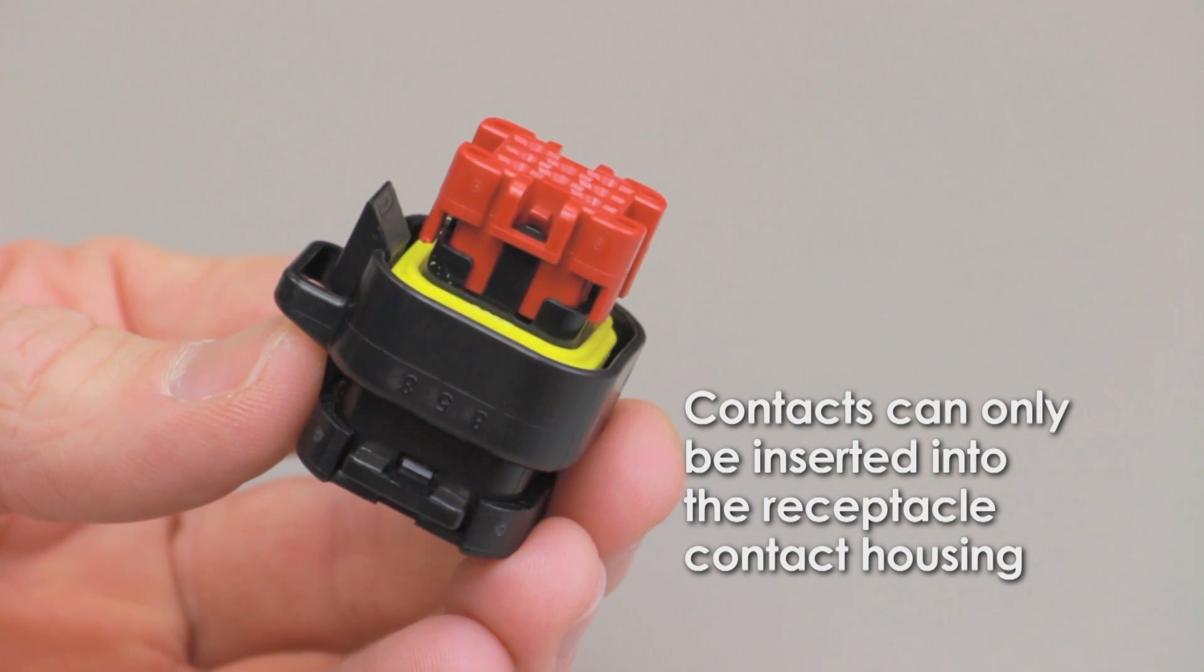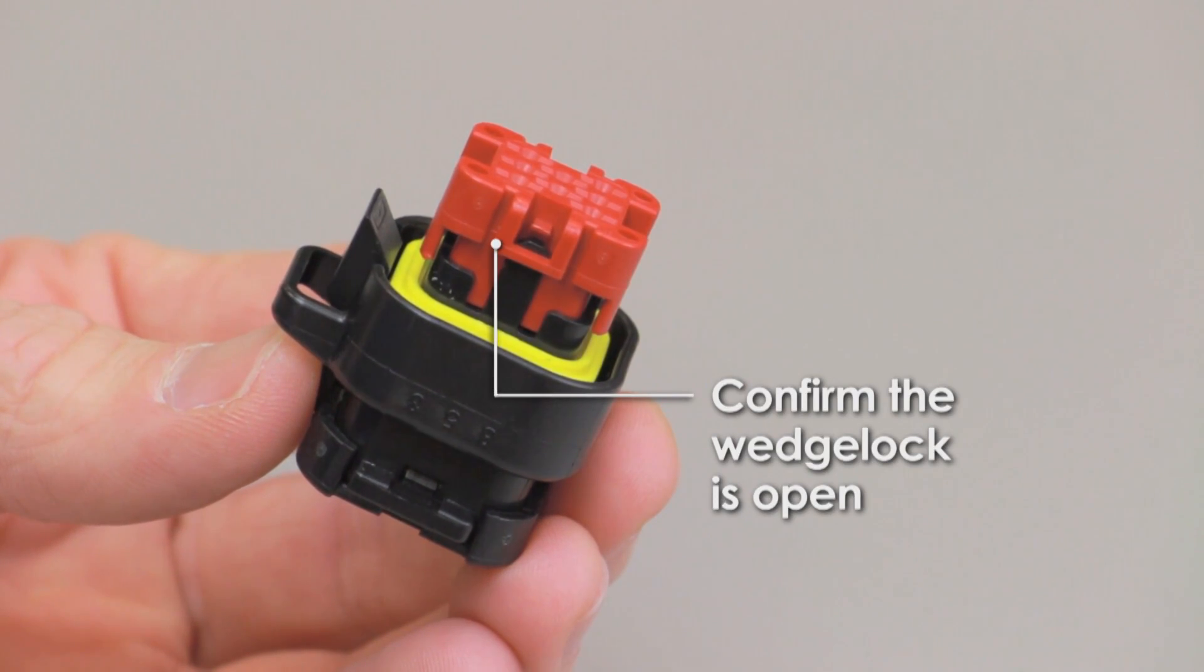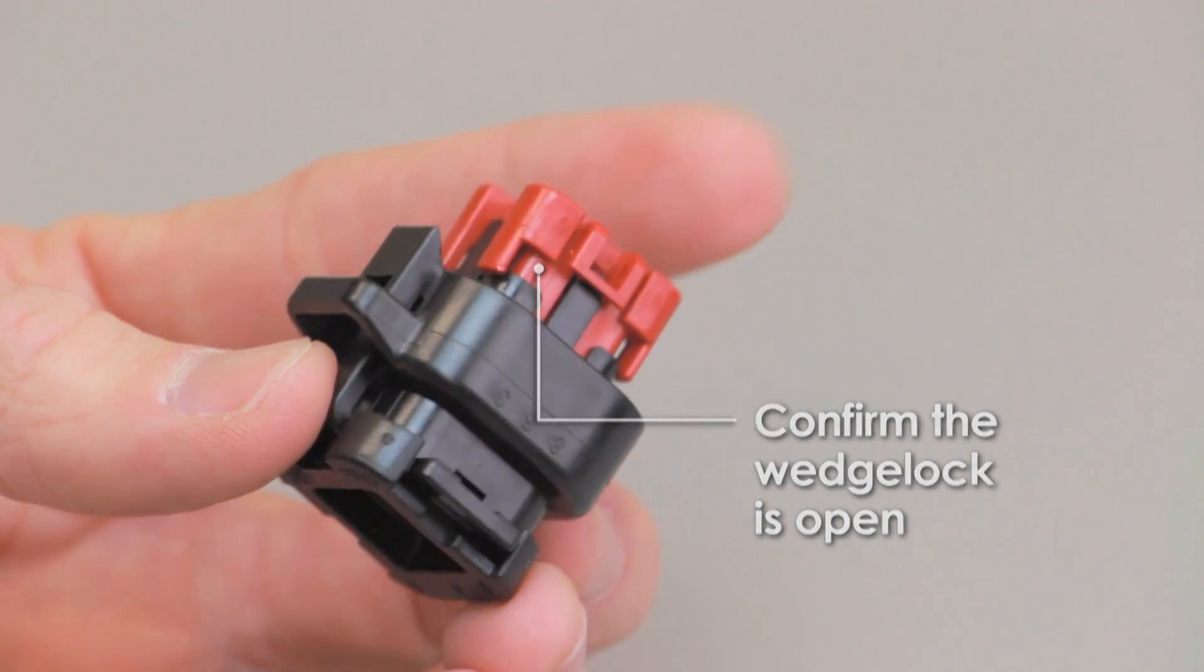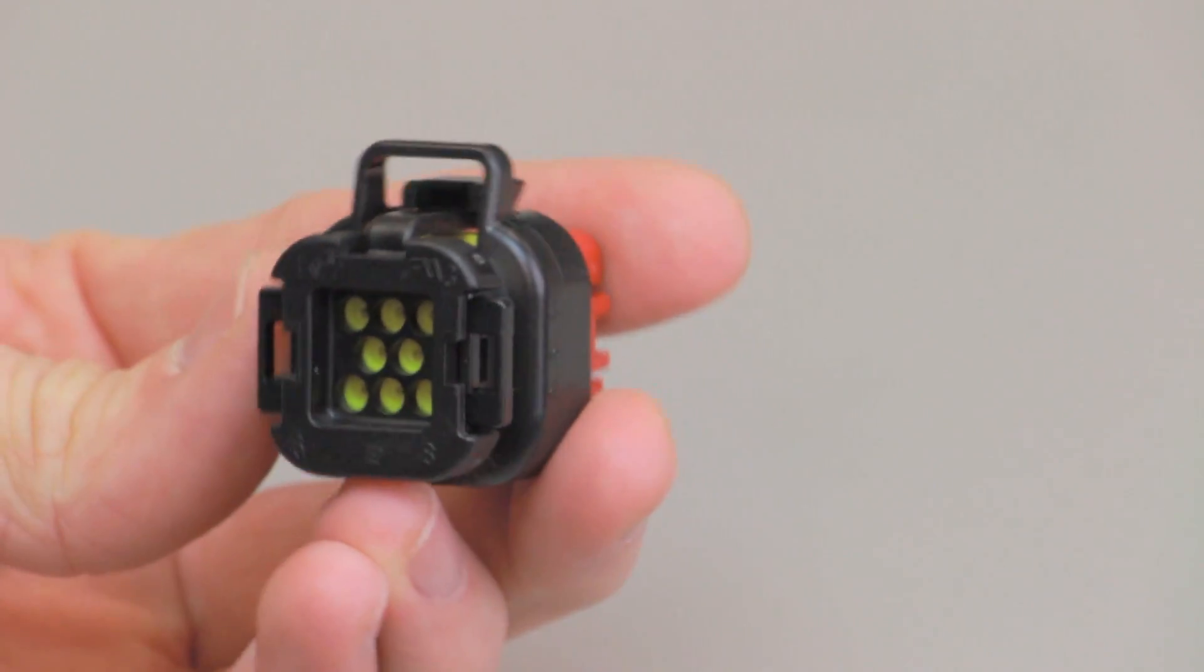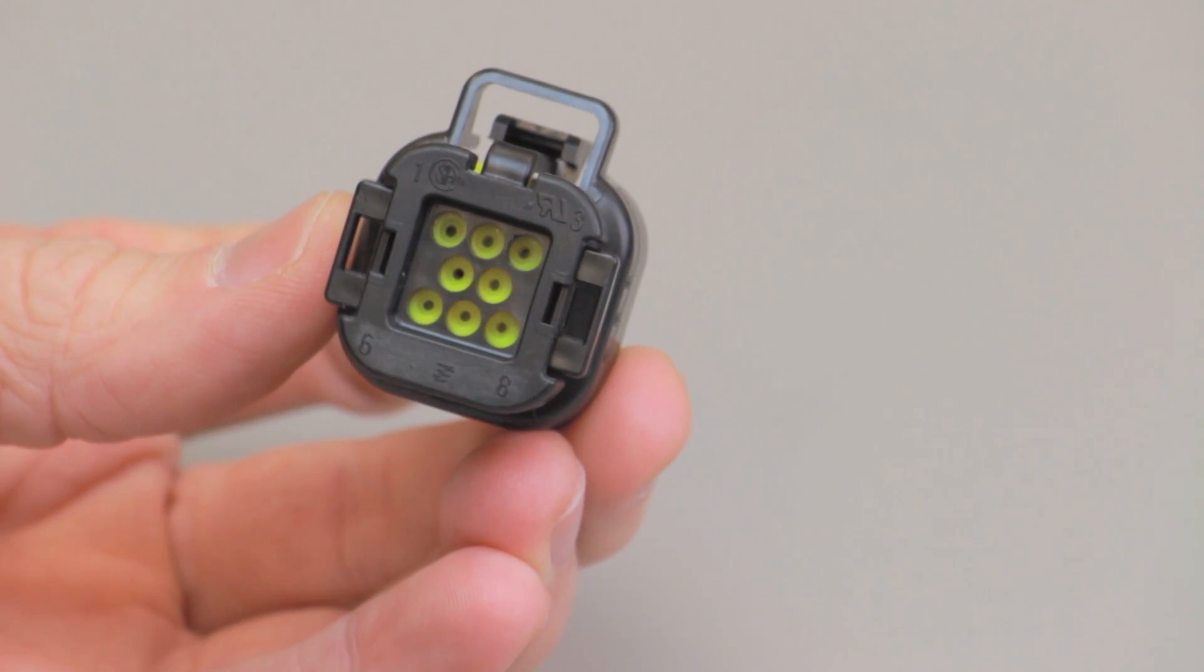Contacts can only be inserted into the receptacle contact housing. Confirm that the wedge lock on the receptacle contact housing is in the open position. Each contact cavity contains a wire seal that helps protect the cavity from contaminants. During contact insertion, the wire seal is pierced as the contact passes through the cavity. Empty cavities will remain sealed.